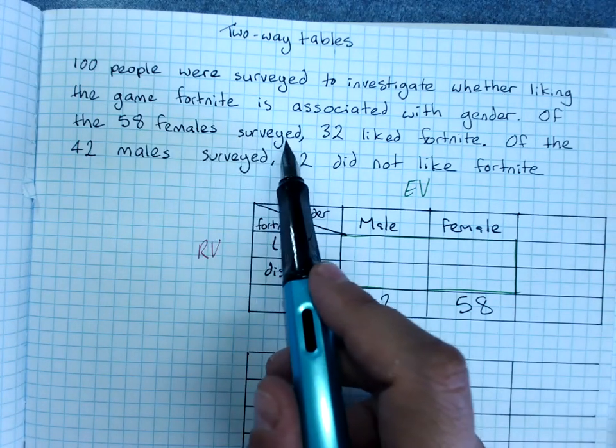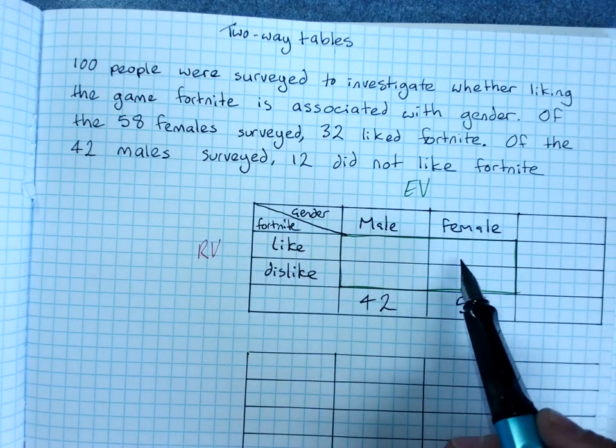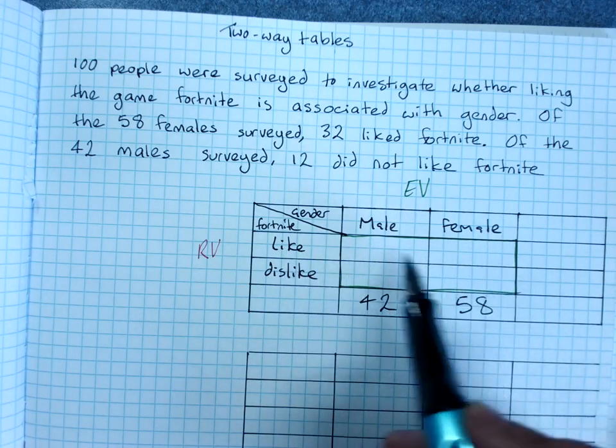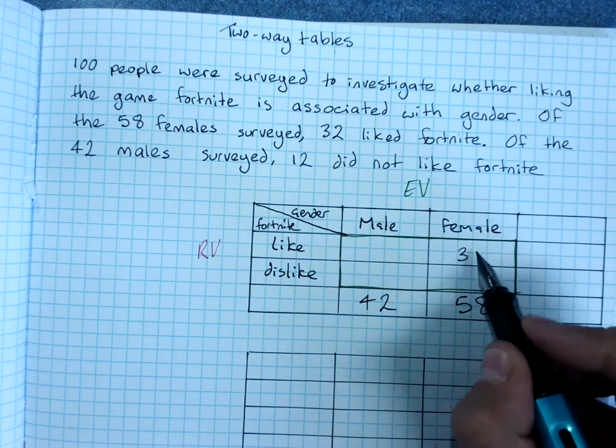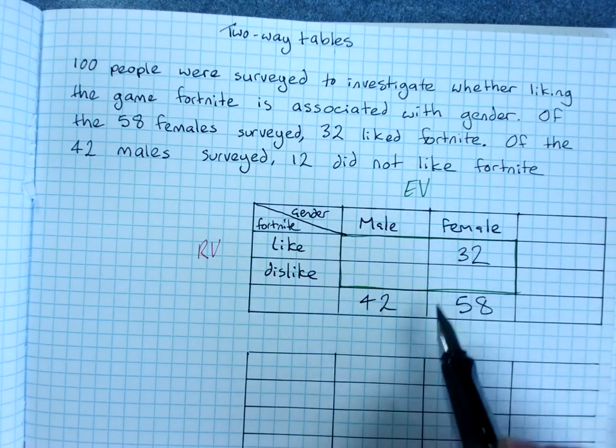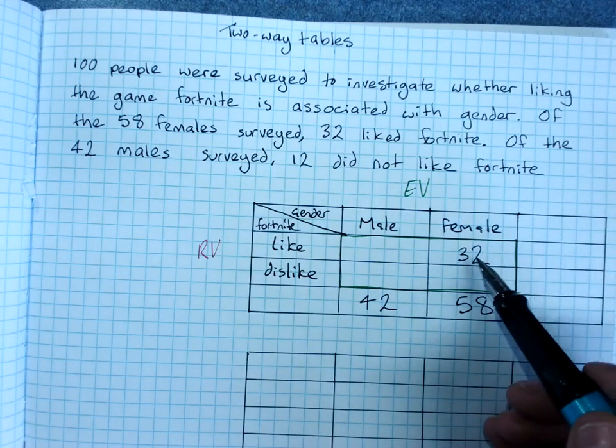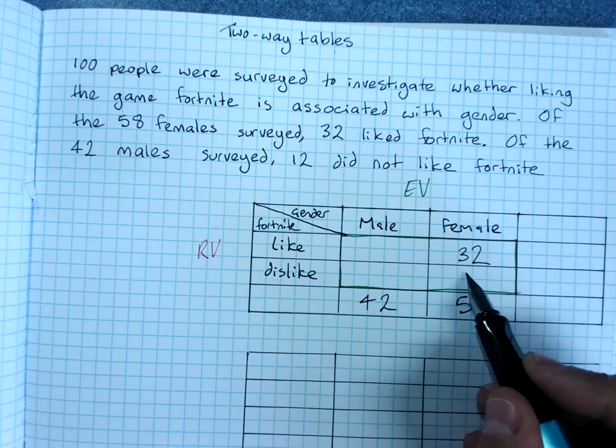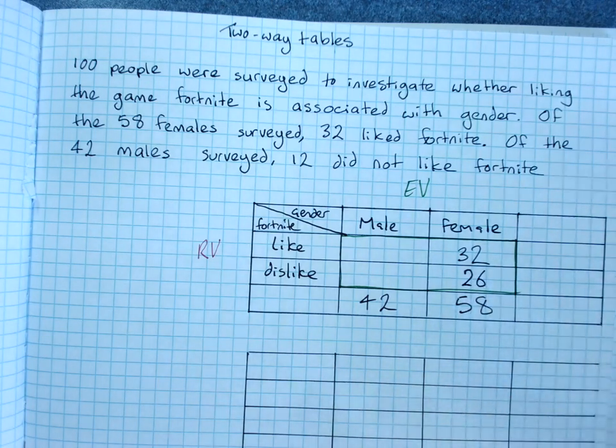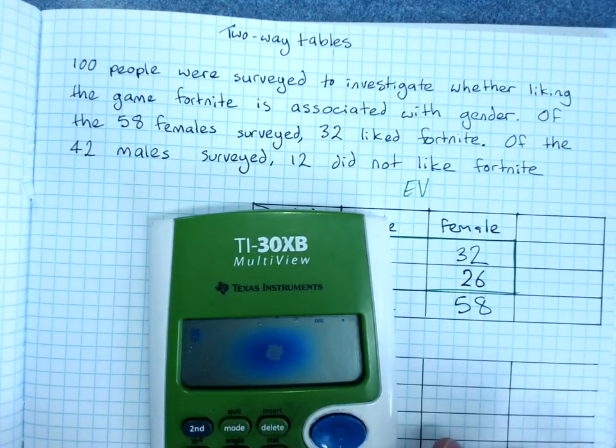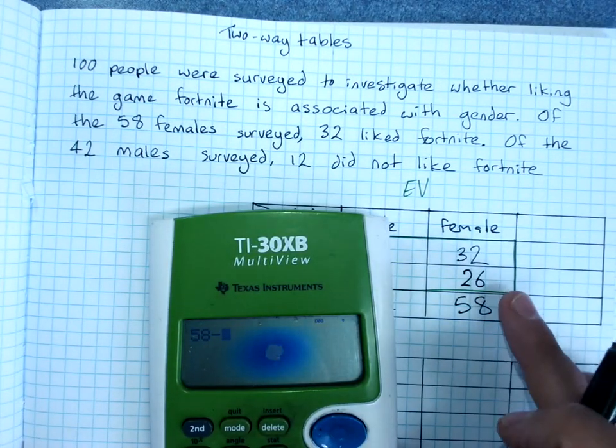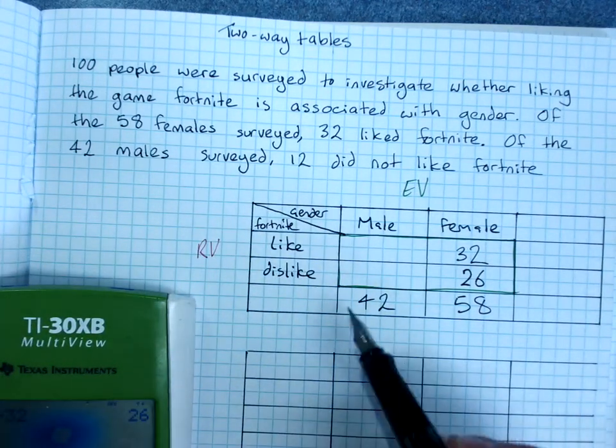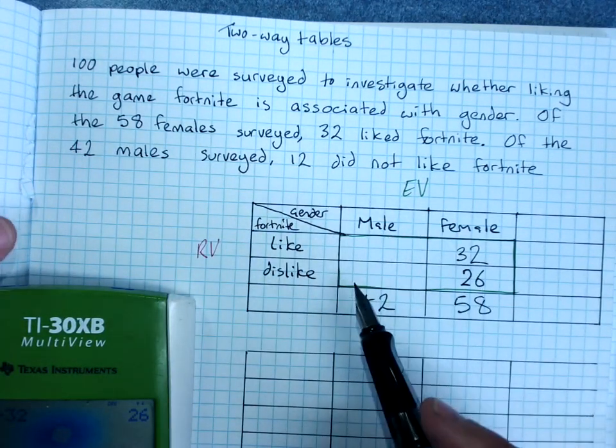Of those 58 females, 32 liked Fortnite. So they go over here. Females who liked Fortnite. And you'd have to subtract to work out how many didn't like it. So it's 32, 42, 52. That would be 26. But you could also very quickly grab your calculator. 58 minus 32. Yes, that was 26.